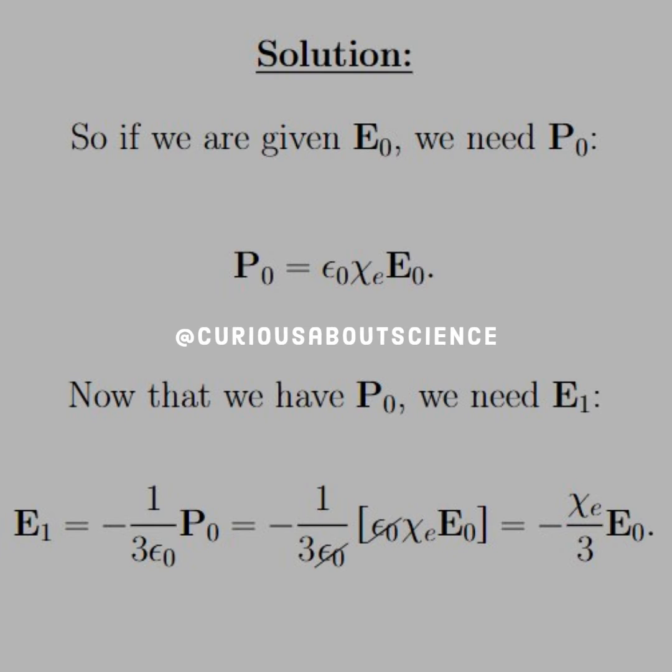Now that we have P0, we need to find E1, which can be given by the second equation. Except now that we have E1 in terms of P0, we need to substitute in P0 and find out what E1 is in terms of E0.